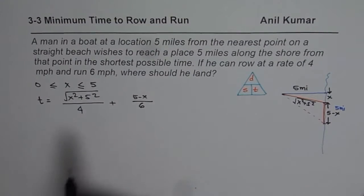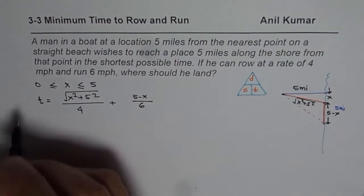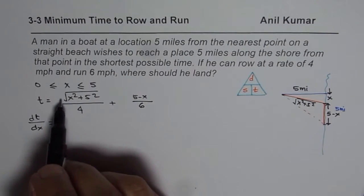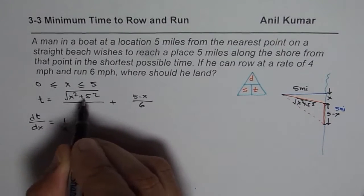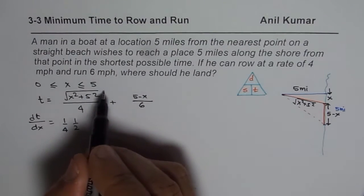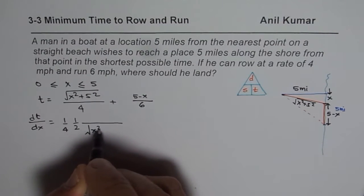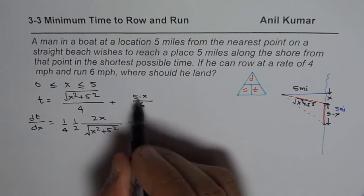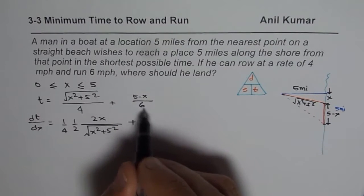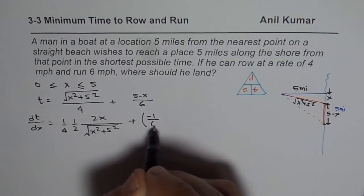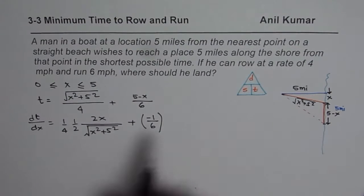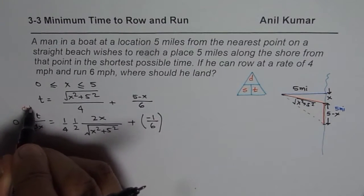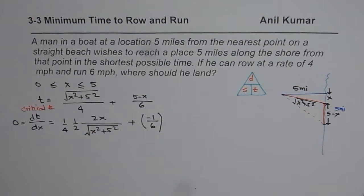To find the minimum time, we find the derivative with respect to x and set it equal to zero. The derivative is (1/4) · (1/2)(x² + 25)^(−1/2) · 2x, plus the derivative of the second part, which is −1/6. So we get dT/dx = x / [4√(x² + 25)] − 1/6 = 0. Setting that derivative equal to zero gives us the critical point.